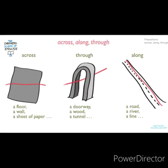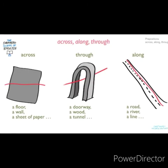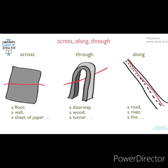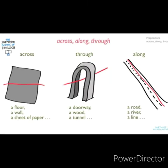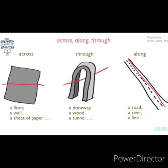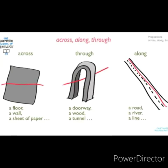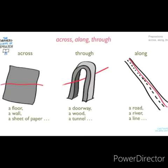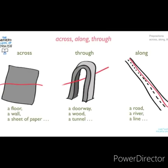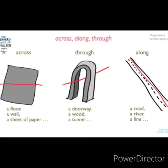So when you move across a floor, or on a wall, or a sheet of paper, we use the preposition across. But when you move inside a doorway, a forest, or a tunnel, you use the preposition through. And when you walk along the road or along the river, you use the preposition along. Understood the difference between across, through, and along? Open area — across. When you move inside a closed area — through. And when you move alongside something — along. Go through this again. Thank you.